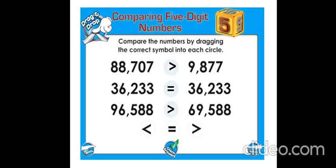Now we are going to see about comparing numbers. Do you know why we compare numbers? To say whether a number is larger, smaller, or equal to another number. There are three symbols we use to compare numbers. See the example: 88,707 and 9,877. The first number has five digits and the second has four digits, so a five-digit number is greater than a four-digit number. Therefore, 88,707 is greater than 9,877.